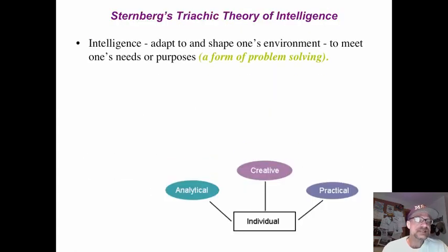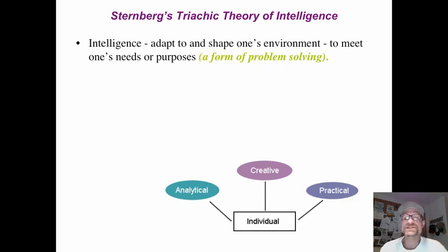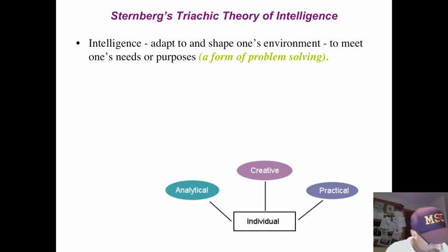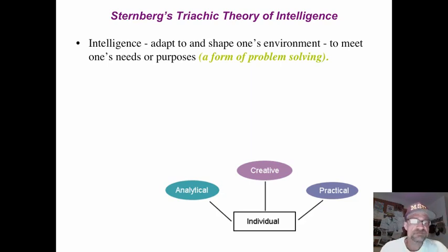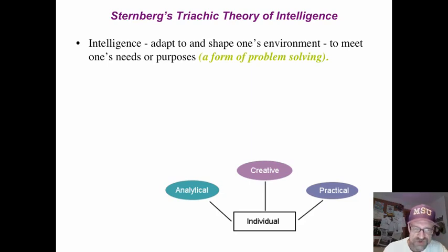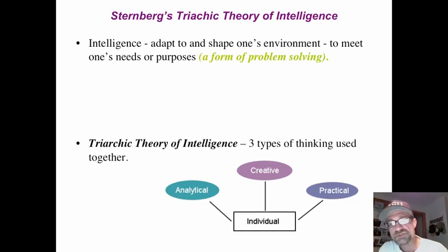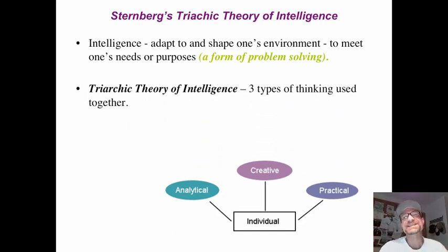First of all, he defines intelligence as the ability to adapt to and shape one's environment in order to meet one's needs. This is a form of problem solving, very similar to Howard Gardner's definition of intelligence as the ability to solve problems. As the problem changes, the type of intelligence needed to solve that problem also changes.